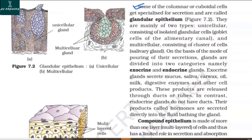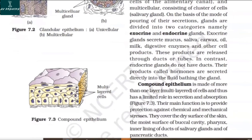On the basis of the mode of secretion, glands are divided into two categories: exocrine and endocrine glands. Exocrine glands secrete mucus, saliva, earwax, oil, milk, digestive enzymes, and other cell products, which are released through ducts or tubes. In contrast, endocrine glands do not have ducts; their products called hormones are secreted directly into the fluid bathing the gland.